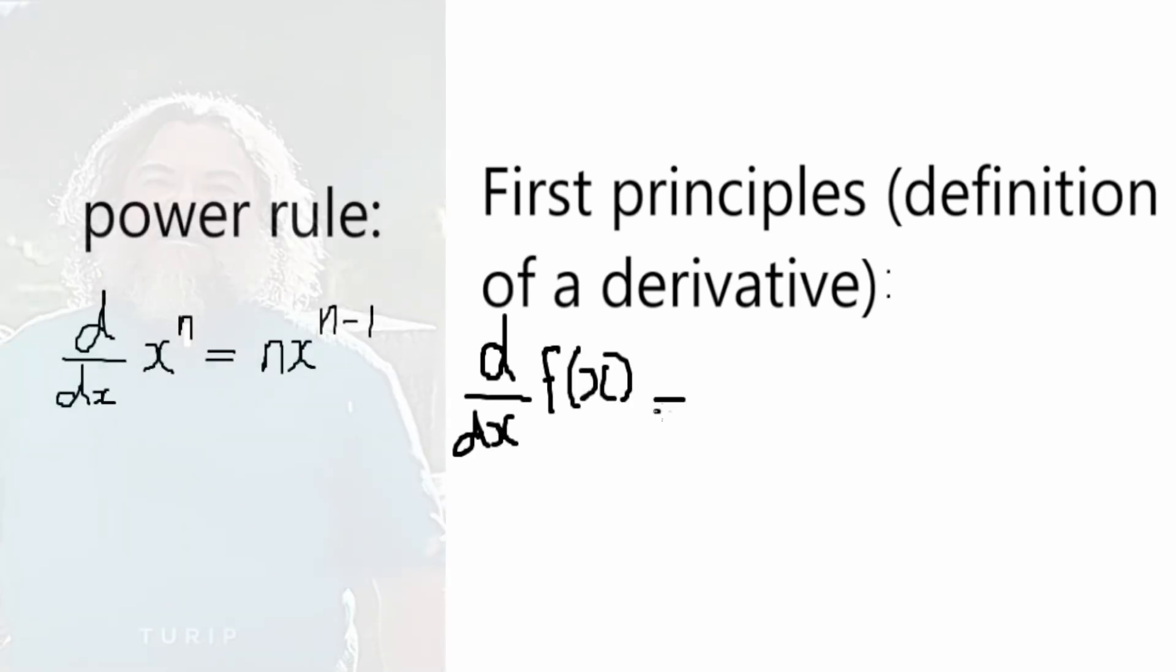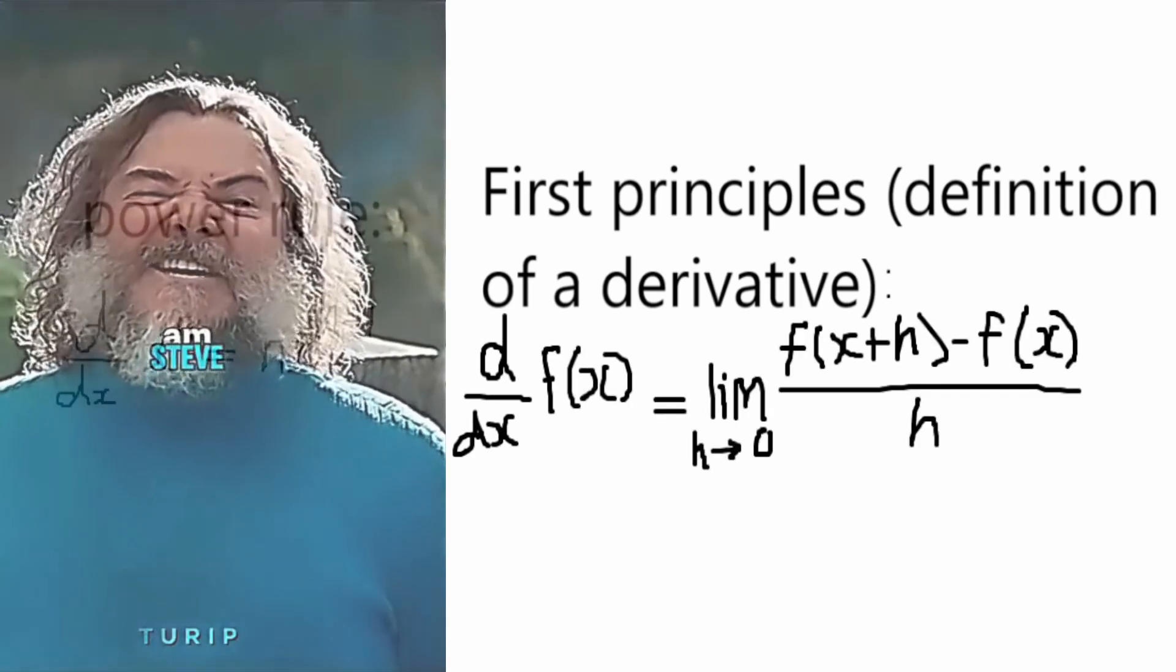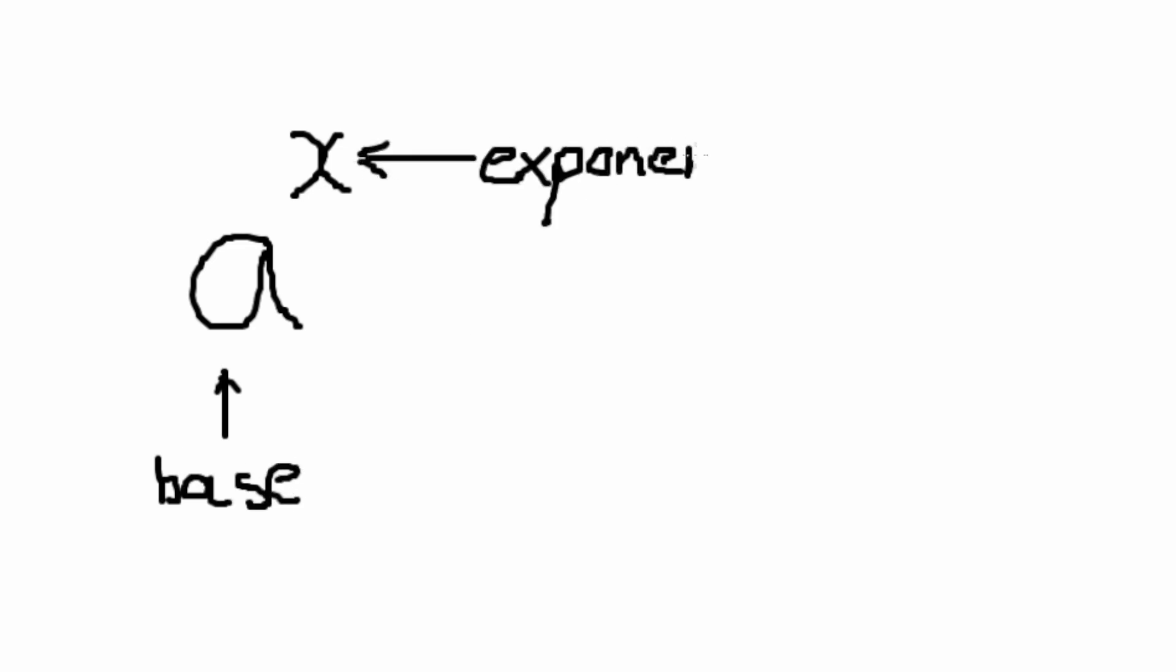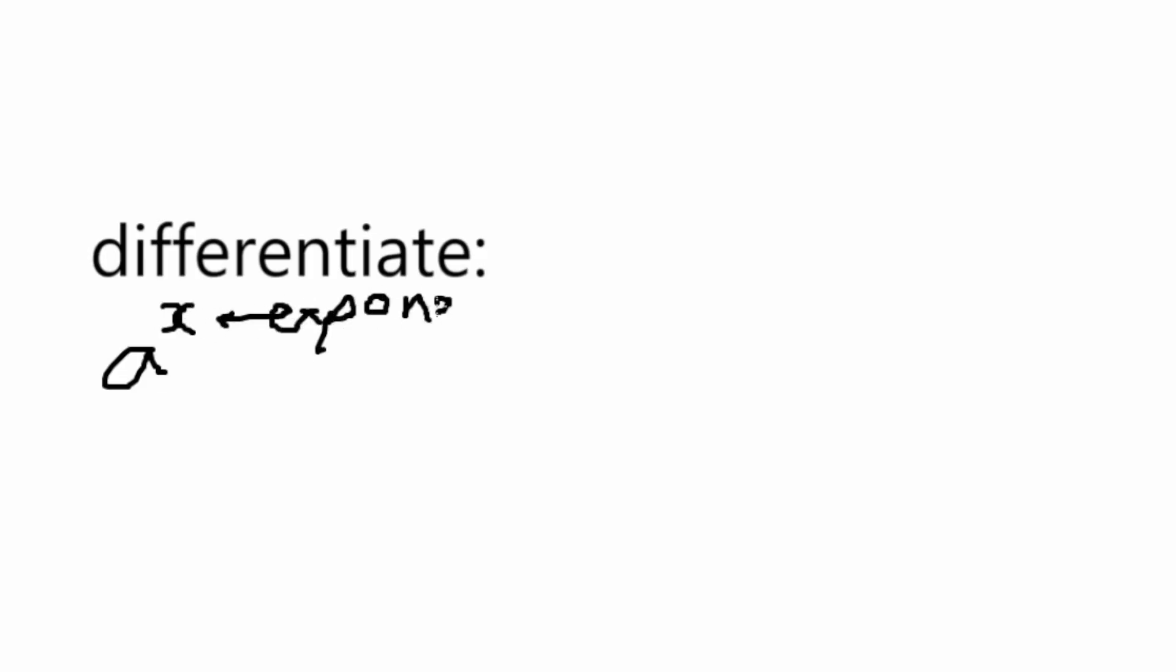The reason why I'm teaching both the power rule and the first principles method, even when the latter looks as dry as the Minecraft movie, is because the power rule has its limitations. If we wanted to differentiate a to the power of x, we can't with the power rule, because that method deals with constants for exponents. As such, we have to use the first principles for terms that have variables for both the base and the exponent. So yeah, let's do that. Because x is the exponent, we replace f of x plus h minus f of x to a to the power of x plus h minus a to the power of x.